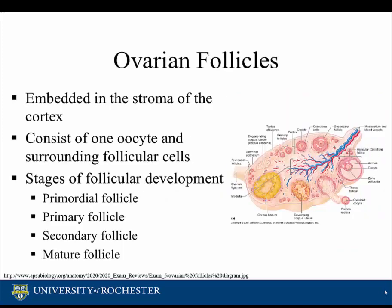The stroma of the cortex also contains ovarian follicles. Each ovarian follicle consists of one oocyte and the surrounding follicular cells. The stages of follicular development are the primordial follicle, the primary follicle, the secondary follicle, and the mature follicle. These stages are shown in the picture on the right.